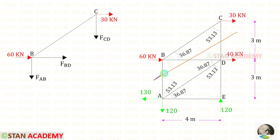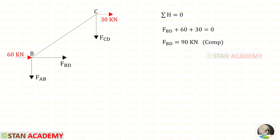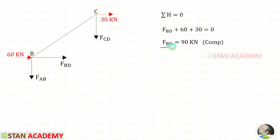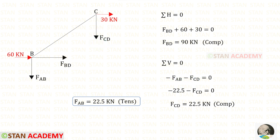Let us make the third section and do the analysis. Applying Sigma H = 0: FBD, 60, and 30 are all acting towards the right side, so all three are positive. For FBD, we will get a negative value — that means it is compressive. Now applying Sigma V = 0: FAB and FCD are both acting downwards, so both are negative. We know FAB = 22.5 (tensile). Applying that, for FCD we will get a negative value — that means it is compressive.